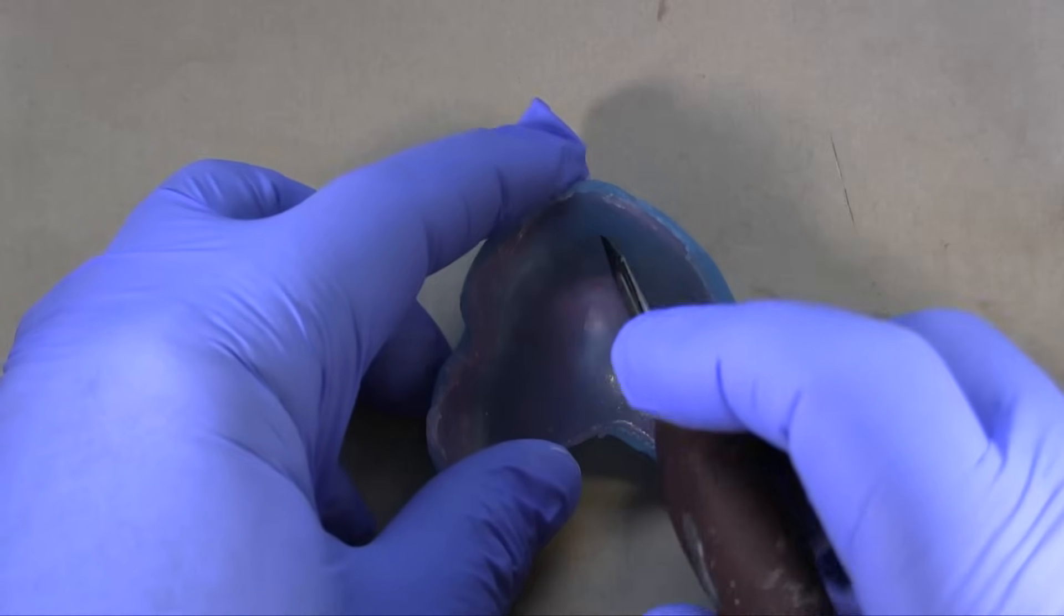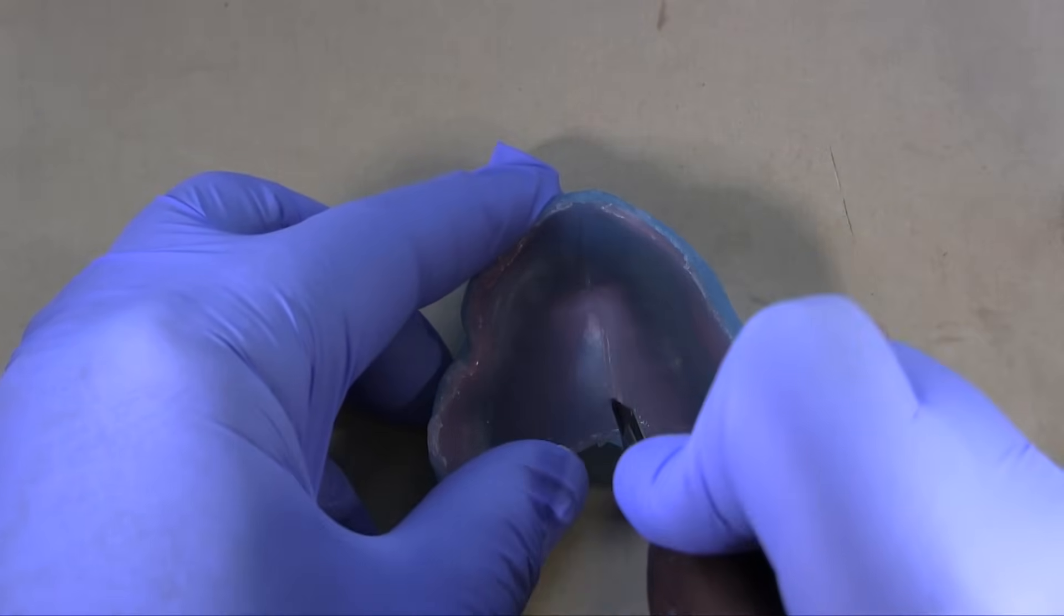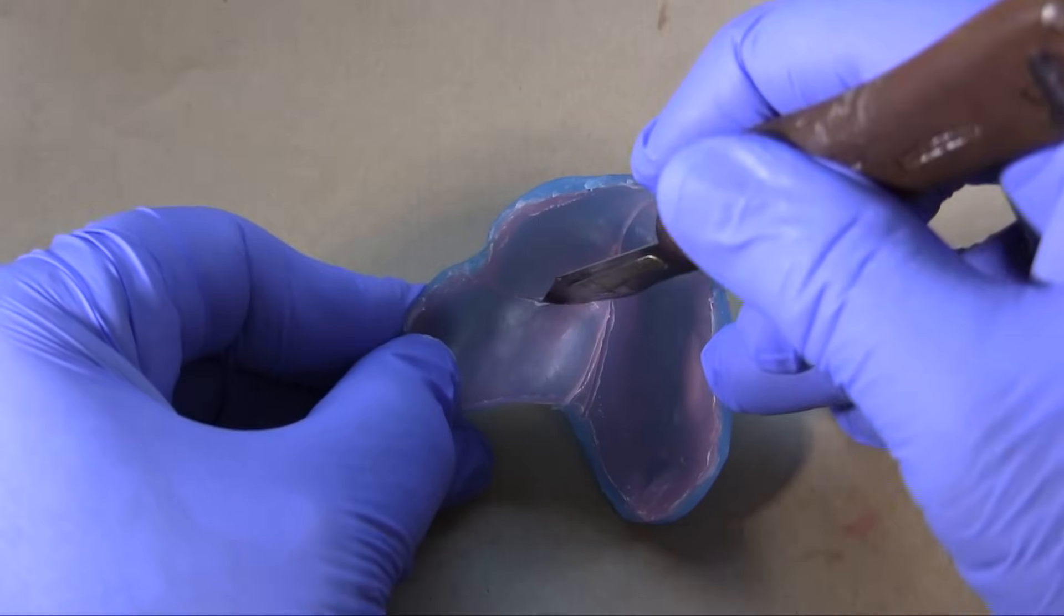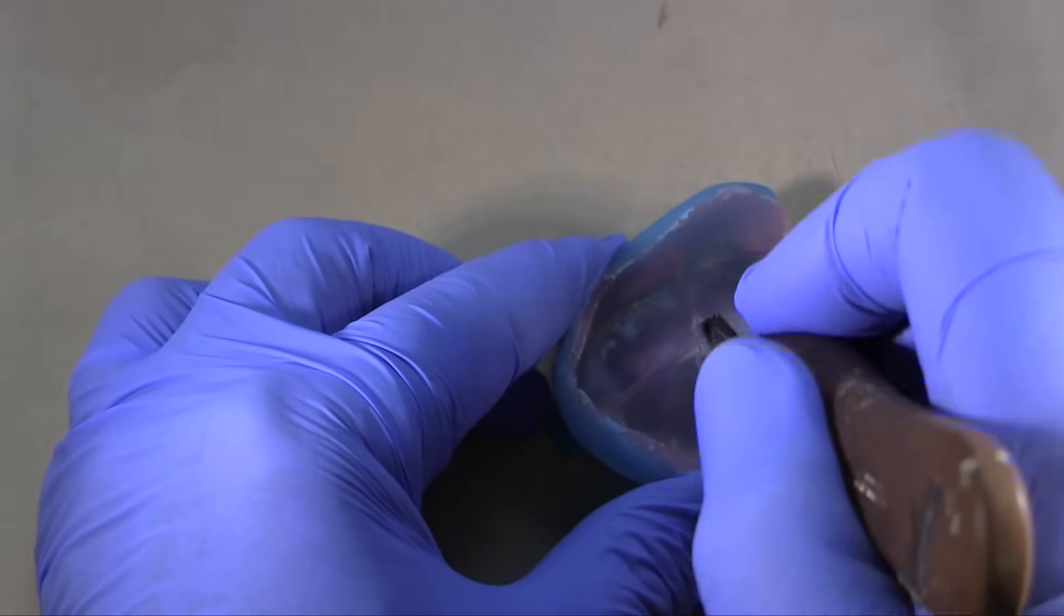Border molding for complete dentures. Custom trays are commonly fabricated with a wax spacer which can be left in place for border molding. However, removing it prior to border molding is easier and prevents damage to the border molding during removal.